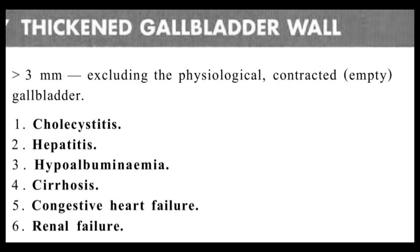This list shows the thickened gallbladder wall differential diagnoses. If gallbladder wall thickening of more than three millimeters is seen on ultrasound imaging, it is considered a thickened gallbladder wall. Make sure this is not physiological — make sure this is not a contracted or empty gallbladder. If despite all these considerations the gallbladder wall is more than three millimeters, this would be considered a true thickened gallbladder wall.